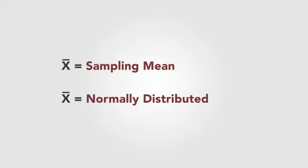So to summarize, sampling mean or x-bar is just the mean of any given sample. A sampling distribution is just the normally distributed means of all possible samples for any given sample size for a population.